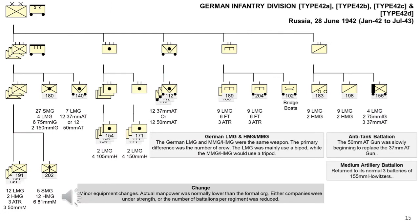We're entering an era with a surprisingly limited amount of information on organisational structure. I'm uncertain what changes occurred between June 1941 and June 1942. Divisions involved in the 1942 offensive in the south may have been at full strength, but Army Group North and Centre certainly were not — likely already on a 2-battalion structure. It's also possible some divisions received the 5cm anti-tank gun in numbers, though I assume those went to the anti-tank battalion first.